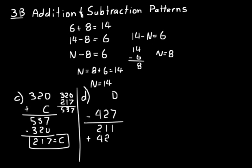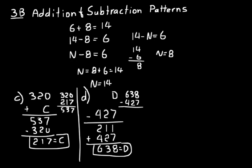We'll do addition to find D because it has to be bigger than 427. Adding 427 and 211: 1 and 7 is 8, 2 and 1 is 3, 4 and 2 is 6. So D equals 638. Let's check: 638 minus 427 — 8 minus 7 is 1, 3 minus 2 is 1, 6 minus 4 is 2 — gives us 211, the same as our original difference. D does indeed equal 638.